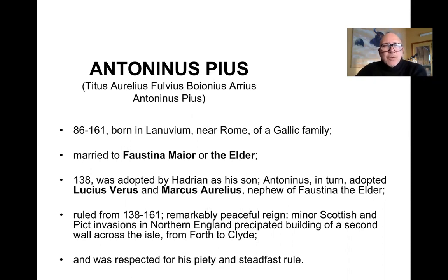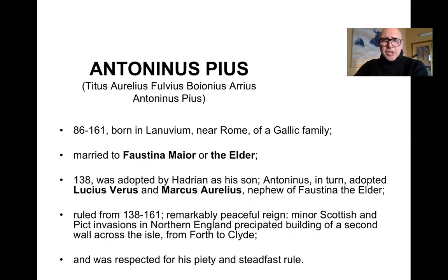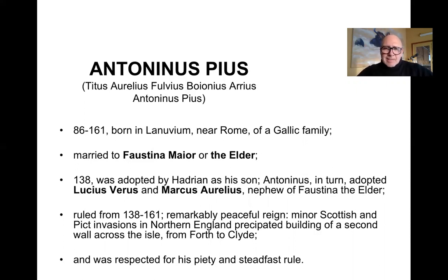Born Titus Aurelius Fulvius Boionius Arius Antoninus Pius, he's known by his last two names. Born in 86 and died in 161 near Rome, in the town of Lanuvium. If you remember, both Hadrian and his predecessor Trajan were Spaniards, but Antoninus Pius is a descendant of a Gallic — that is, a French — family. So we have another potential foreigner on the Roman throne. He married Faustina the Elder, and in 138 he was adopted by Hadrian as his son. Antoninus in turn would adopt two young men, Lucius Verus and Marcus Aurelius — Marcus Aurelius being the nephew of Faustina the Elder. He ruled from 138 to 161.